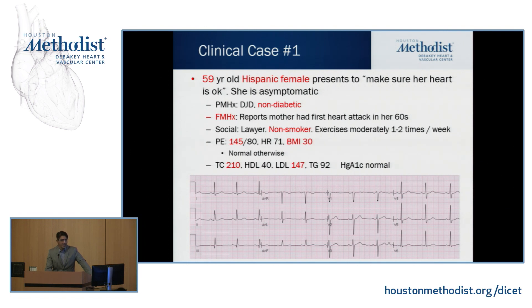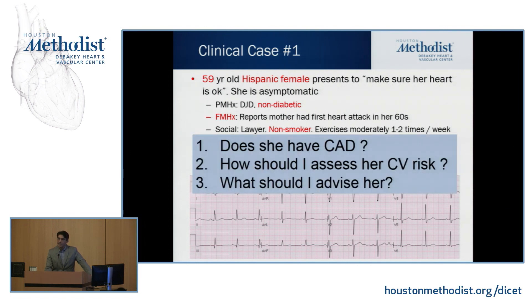On physical exam, she's hypertensive with a blood pressure of 145 over 80, and she's obese with a BMI of 30. Basic labs show her sugars are okay, total cholesterol is 210, HDL is 40, LDL is 147, and triglycerides are 92. As clinicians, she's asking you: does she have coronary artery disease, how should I assess her cardiovascular risk, and what should I advise her?